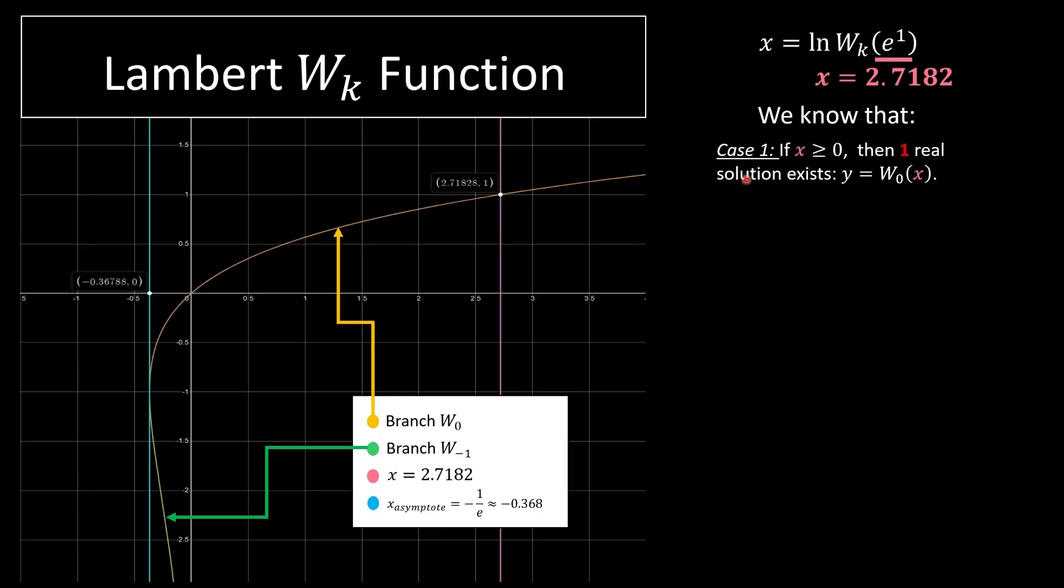Now there's three cases. The first case, is our value bigger than 0? Yes it is. That means we have one real solution in branch W of 0. So be in this branch. As you can see, it intersects the orange and the pink line. So that's our solution.